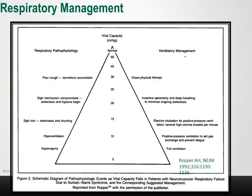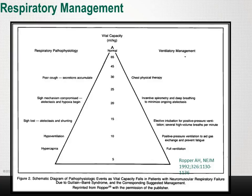The respiratory pyramid from the Rothwell review in NEJM shows vital capacity from normal down to 5 mL/kg, with accompanying respiratory pathophysiology and recommended ventilatory management. At about 30 mL/kg, poor cough and secretion accumulation begin, and chest physical therapy is recommended. At about 20, the sigh is compromised and atelectasis and hypoxia begin, requiring incentive spirometry and deep breathing. At about 15 mL/kg, patients are usually intubated.